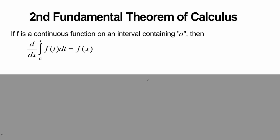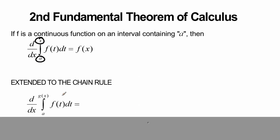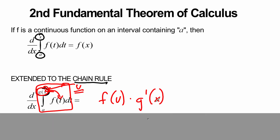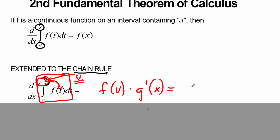Finally, to wrap things up: with the Second Fundamental Theorem concept you can also take the derivative of a definite integral not just going from a constant to x, but from a constant to a function of x, g(x). That involves the chain rule. We plug our u in to get f(u), and then apply the chain rule by multiplying by the derivative of u, which is g'(x). So the derivative comes out to f(g(x)) times g'(x).